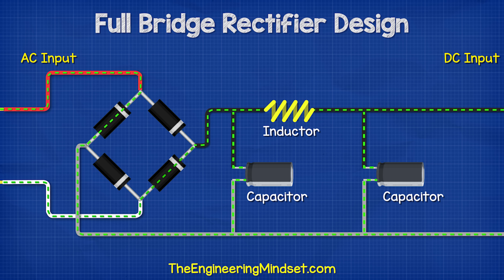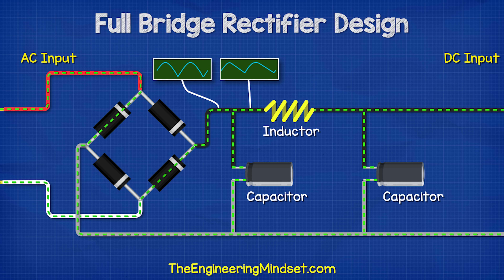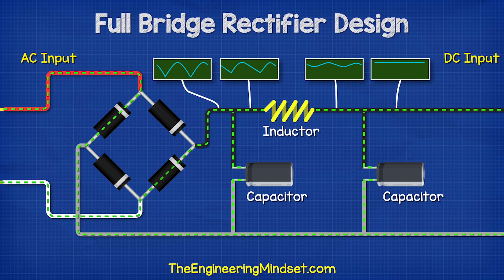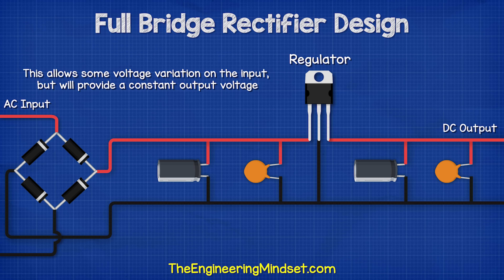Another common filter is placing two capacitors in parallel with a series inductor between them. This is used for circuits with larger loads. The first capacitor smooths the ripple. The inductor opposes the change in current and tries to keep it constant. The second capacitor, which is much smaller, will then smooth out the final remaining ripple. Additionally, we can also connect a voltage regulator to the output. This is very common and allows some variation to the input, but it will provide a constant output voltage. This again has capacitors on either side of the regulator to ensure a smooth DC output.